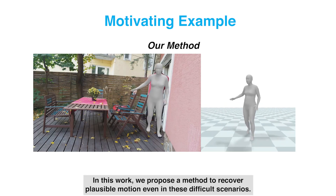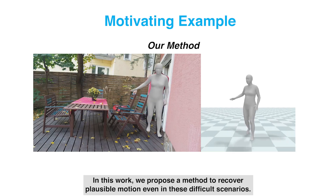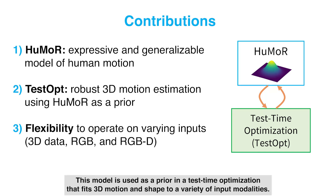In this work, we propose a method to recover plausible motion even in these difficult scenarios. This is achieved through our expressive and generalizable motion model called HUMOR. This model is used as a prior in a test time optimization that fits 3D motion and shape to a variety of input modalities.